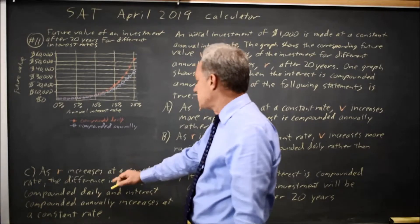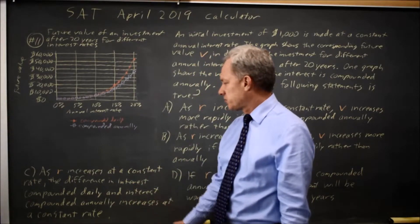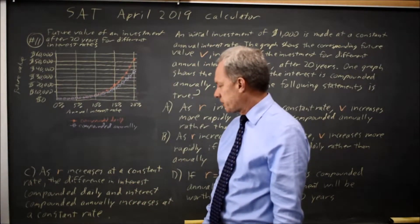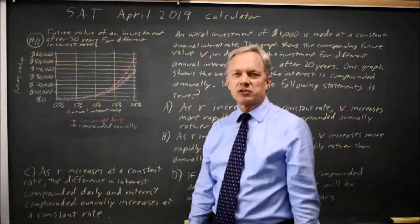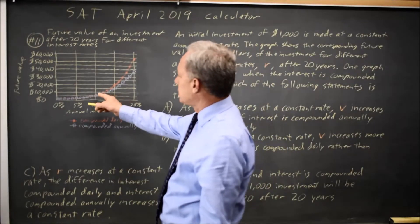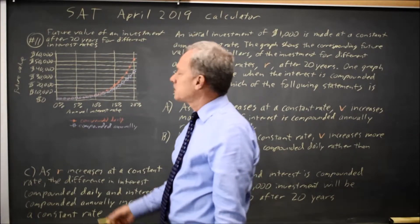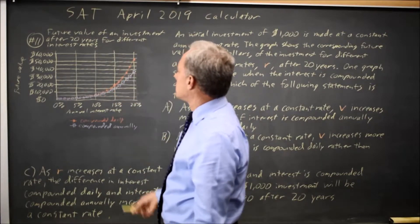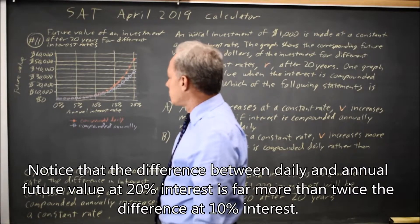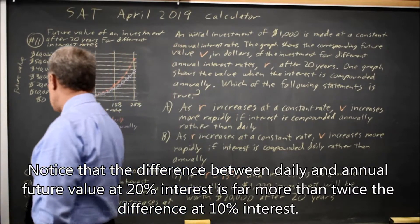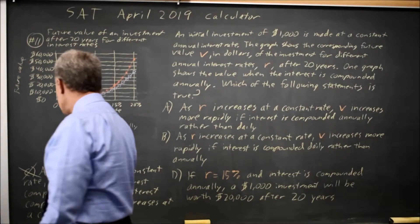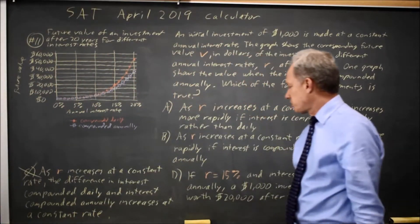Choice C says as R increases at a constant rate, the difference between interest compounded daily and interest compounded annually increases at a constant rate. If we look at this, it looks like rather than moving apart at a steady rate, they're moving apart at an increasing rate. So choice C is wrong—it does not match the picture.